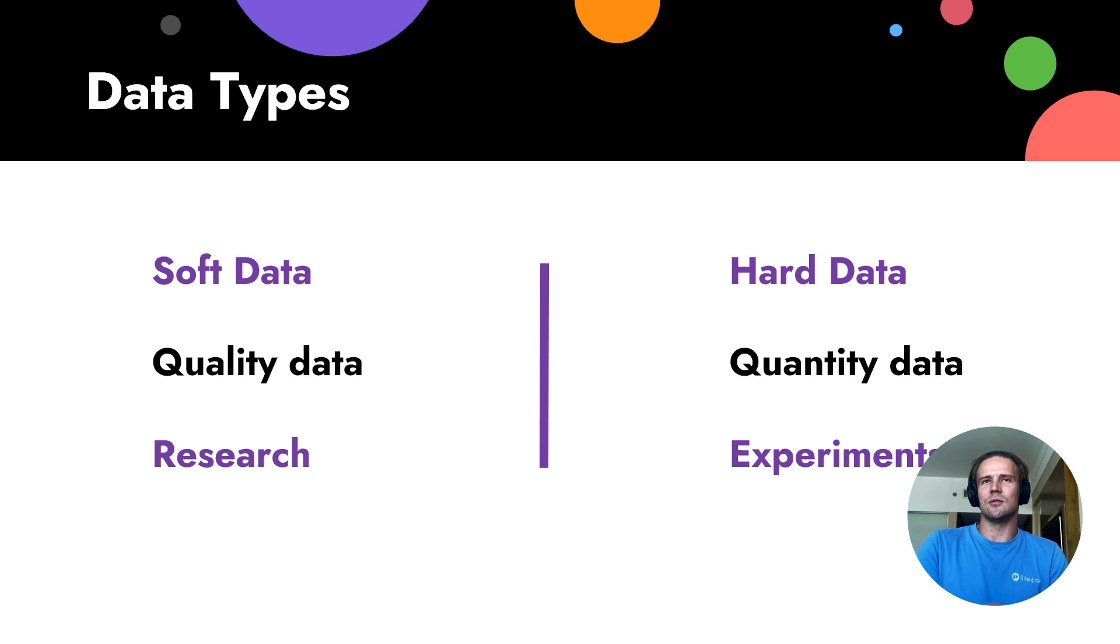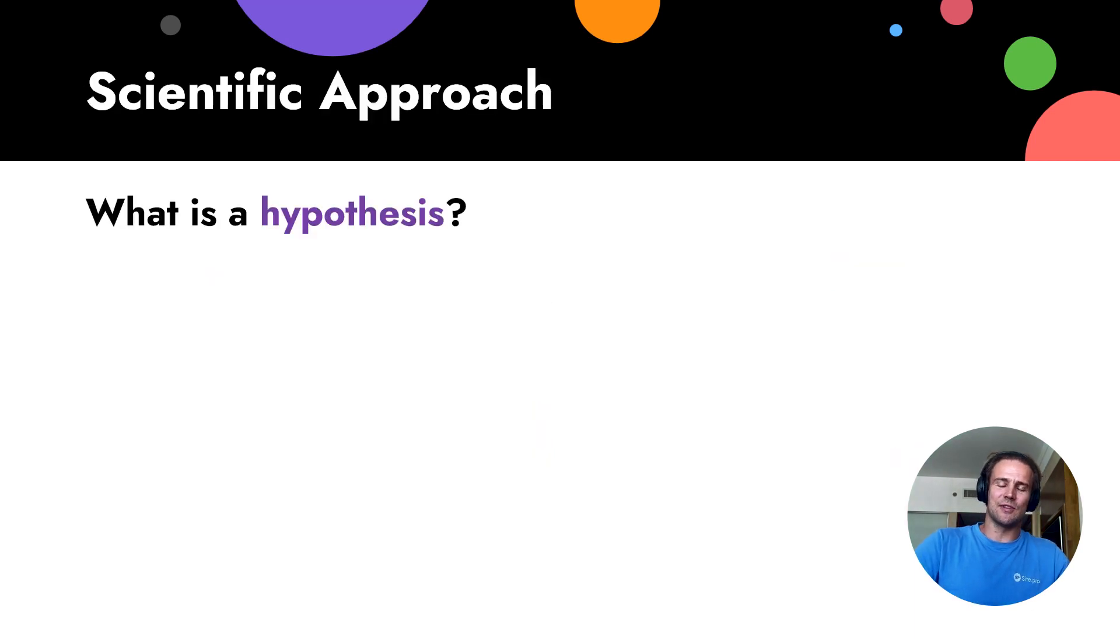We usually get it from research, from different types of research. So also there are hard data. Hard data means we get usually from analytics. It provides quantity. So quality and hard data will provide quantity. Usually get from analytics, from experiments, et cetera. So we need both data. Two types of data help us.